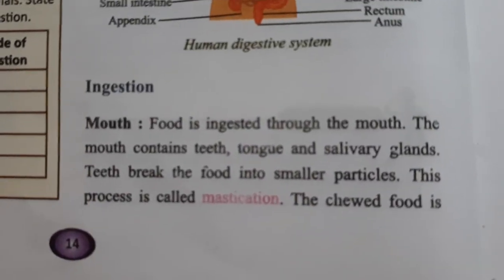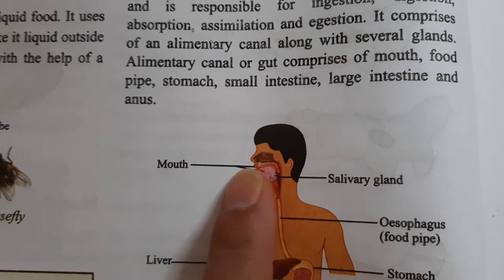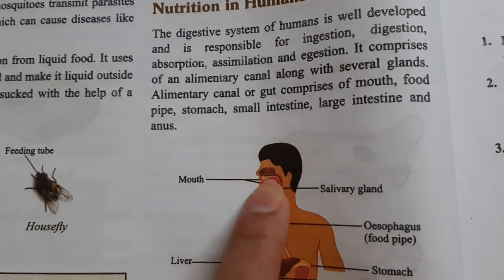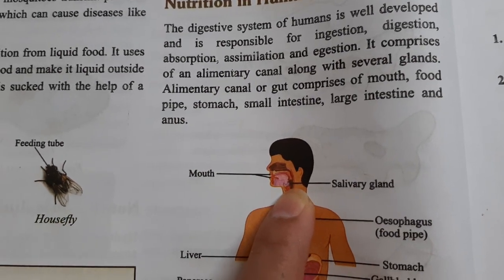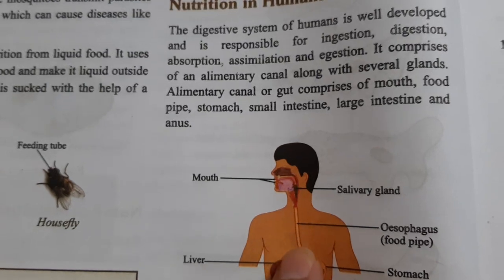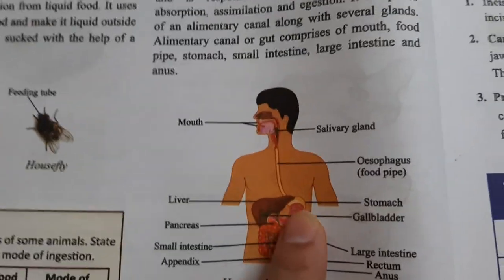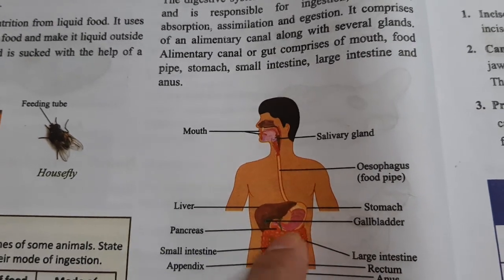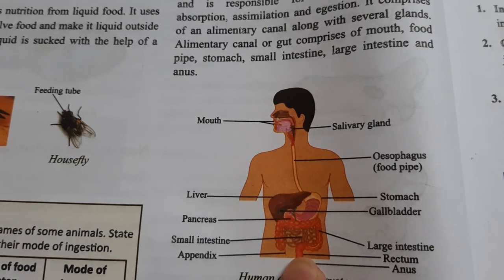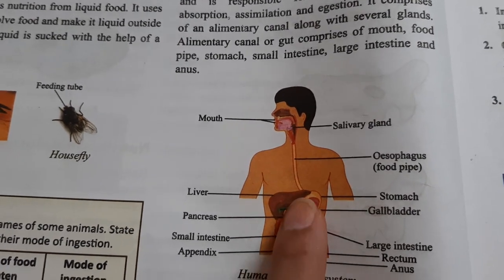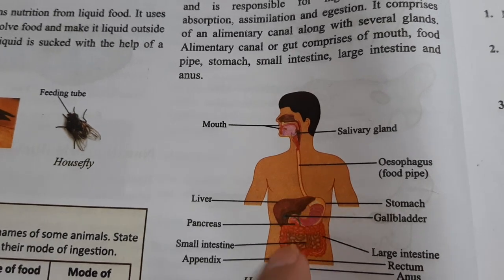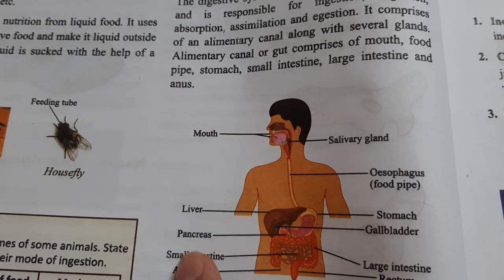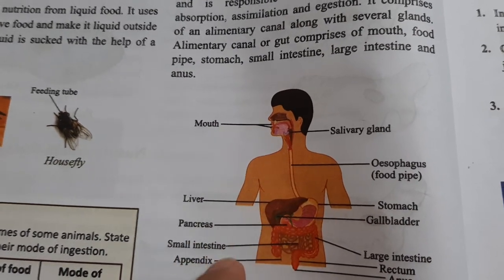The first process is ingestion, which starts from the mouth. Salivary glands present here secrete saliva. The food pipe is also known as the esophagus. The upper U-shaped structure is the stomach, followed by the small intestine and large intestine. Liver and pancreas are situated here as part of the digestive tract along with associated glands.